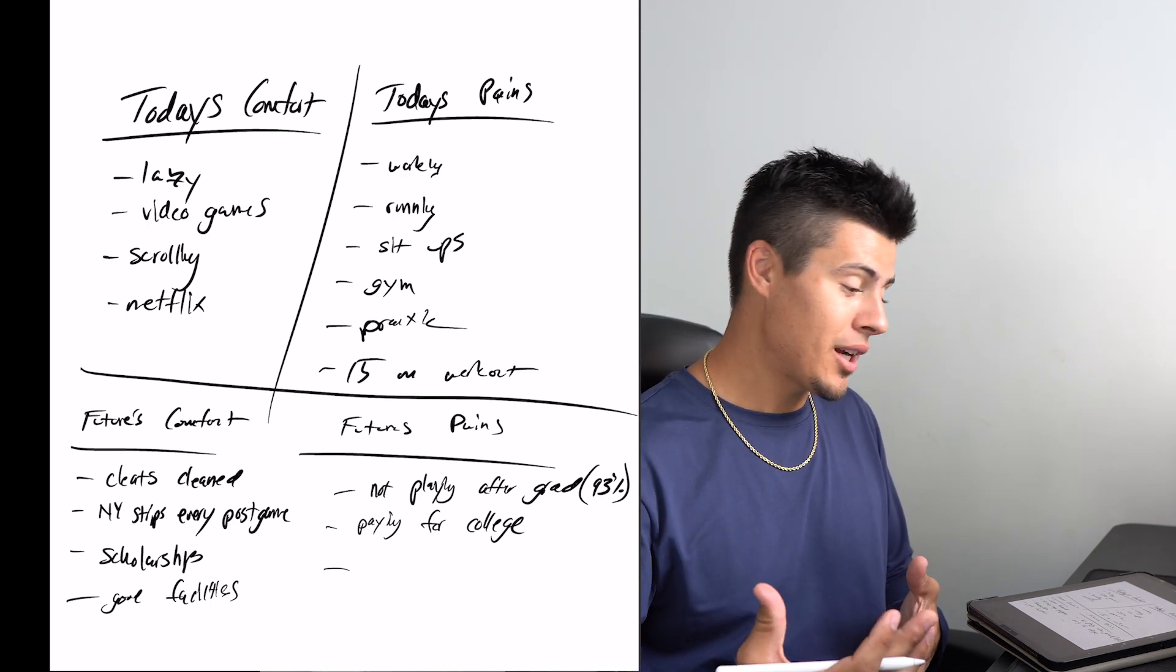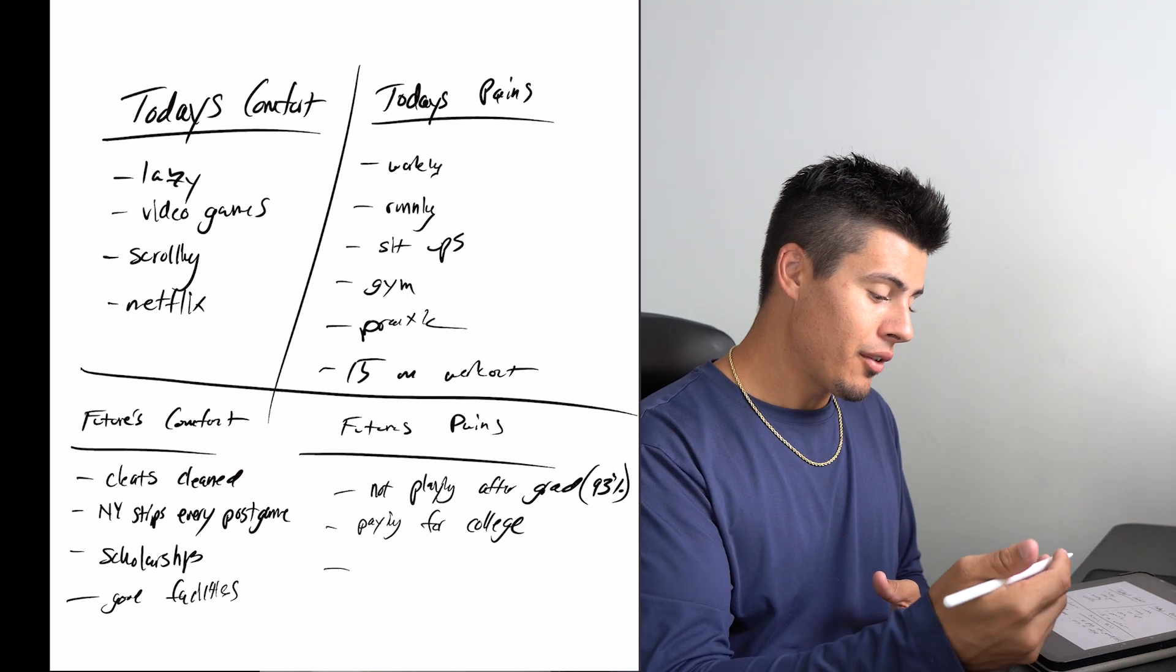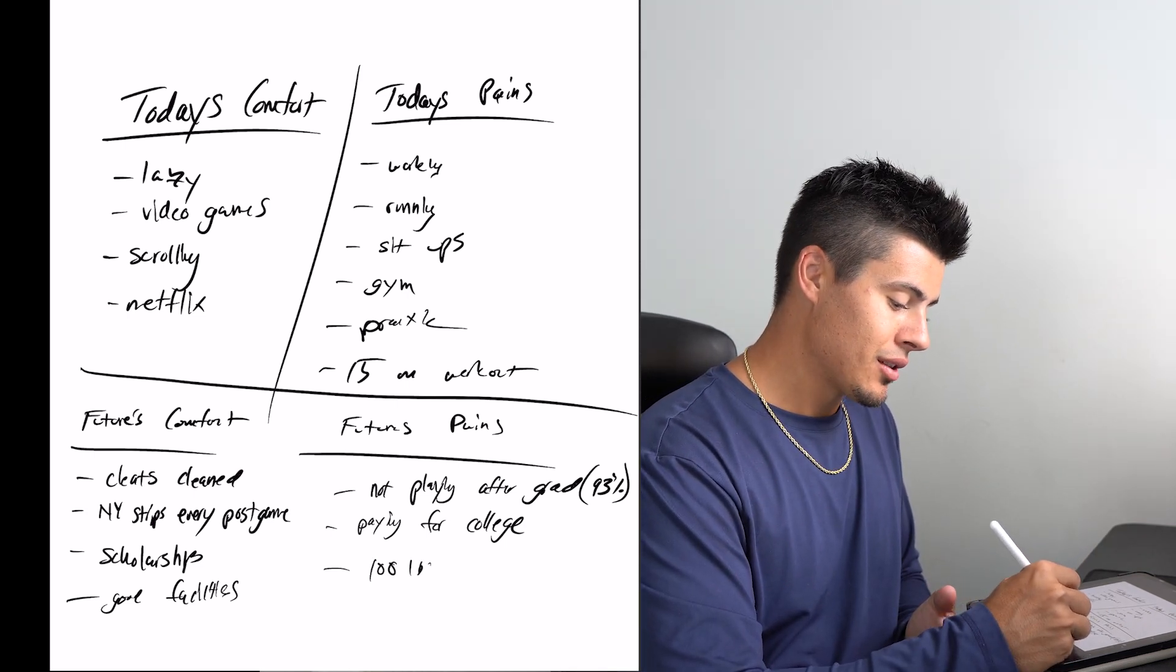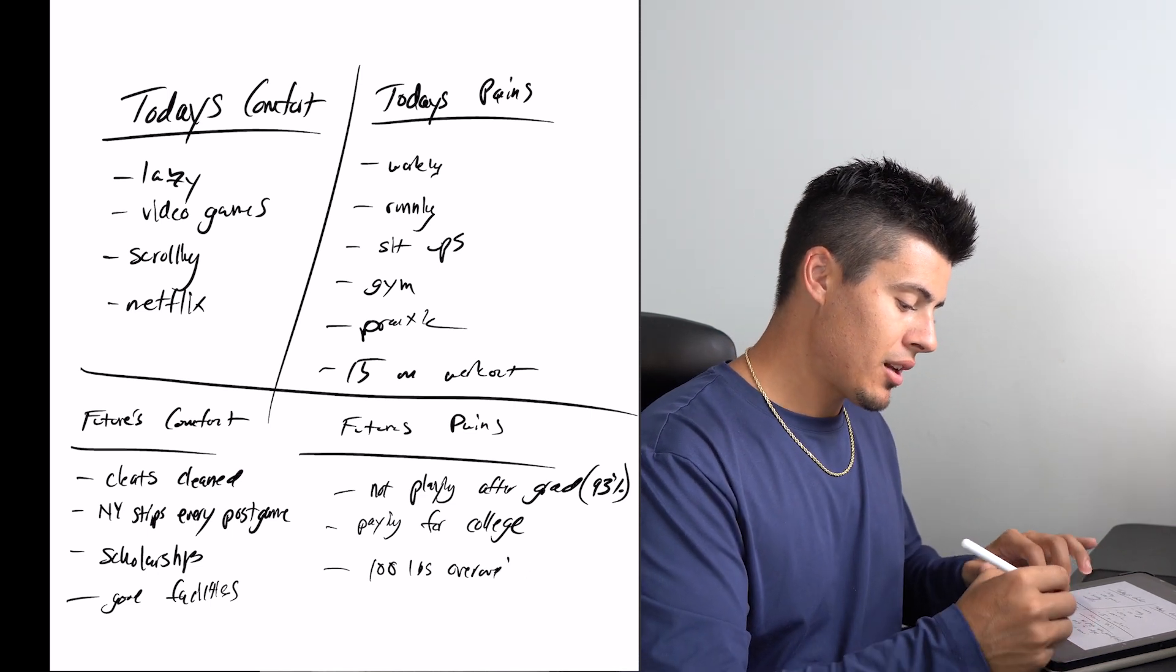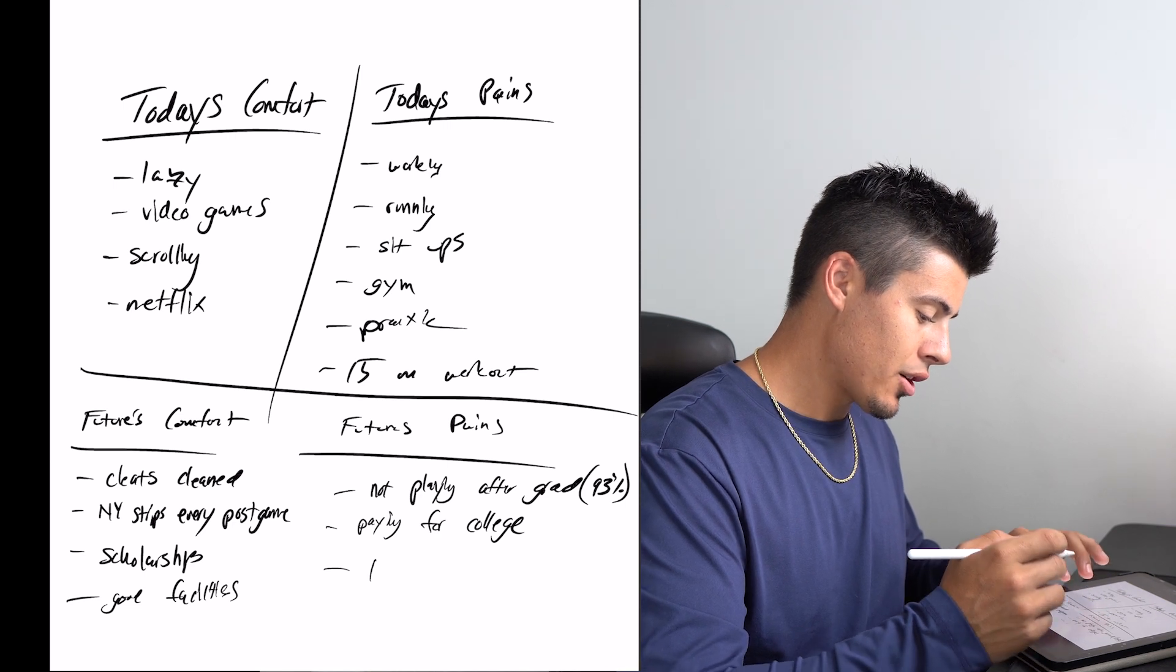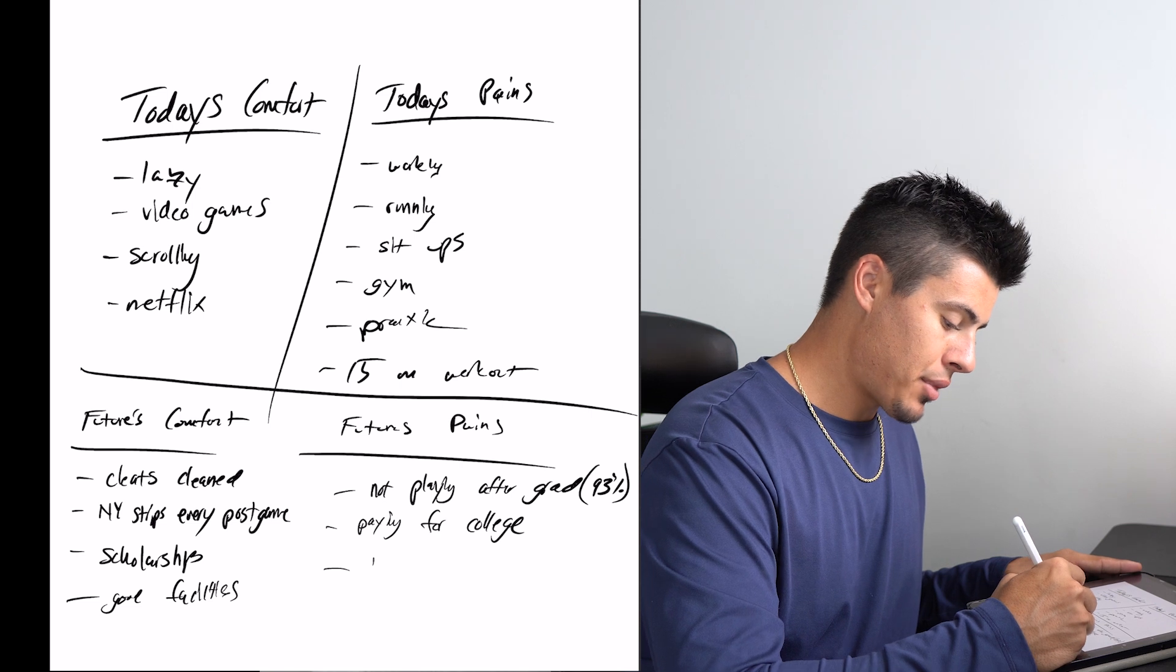I just thought as an example, but a future comfort is having a chiseled six pack when you're 40 years old. That would be a pretty awesome comfort. But today's pain would be to do sit-ups. But a future pain would be 100 pounds overweight. But if we're really talking about it, that's just a health and wellness example. And it's not necessarily talking completely about baseball, but a future pain could be behind the curve.